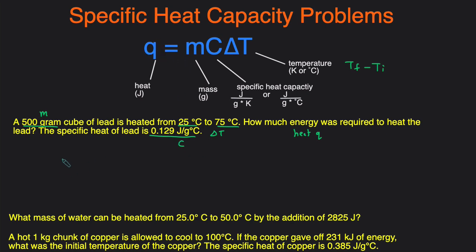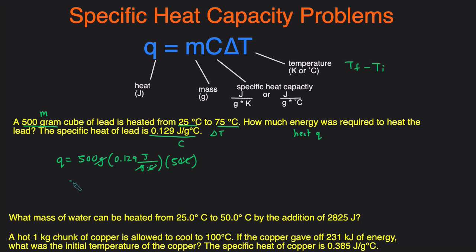We can just plug that into the equation: Q equals the mass which is 500 grams — it's already in grams so we don't need any conversion. The specific heat was 0.129 joules per gram times degrees Celsius. The change in temperature is the final temperature minus initial temperature, so that's 75 minus 25 which is 50 degrees Celsius. The grams and degrees cancel out, leaving joules. So this will be 500 multiplied by 0.129 times 50, and the answer is 3,225 joules.